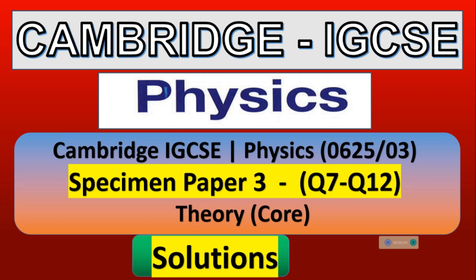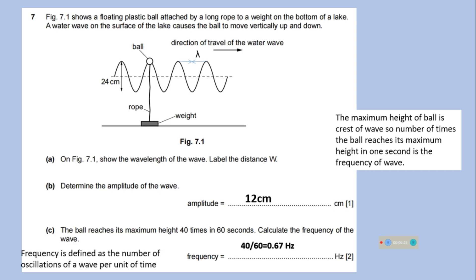Hello students, in this video we will solve specimen paper 3, it's a Cambridge IGCSE paper code 0625. A video from question number 1 to 6 has been uploaded already and in this video we will solve questions 7 to 12.